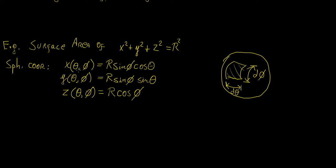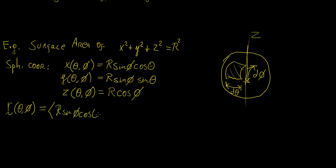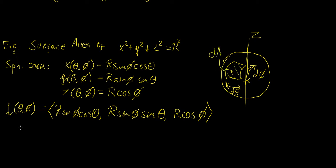Those two variables are the angle theta — the rotation along the z-axis — and phi, the rotation with respect to the x or y axis. Using these as the parameters of the parametric surface, we can write r(theta, phi) as the vector: (r sin φ cos θ, r sin φ sin θ, r cos φ). The element of area is just dφ dθ, since it's like a rectangle.